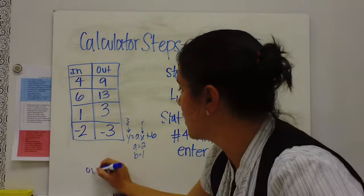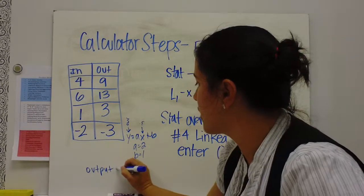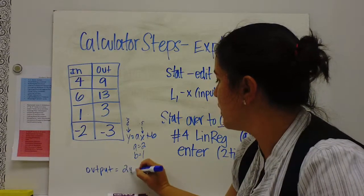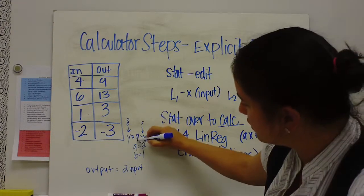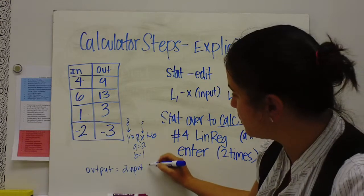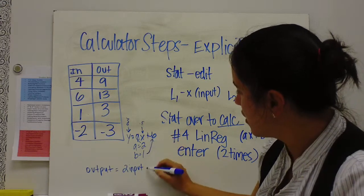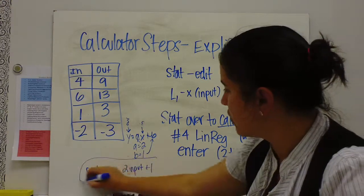So it would look like output equals 2 input, and remember the 2 comes from the a, so 2 times input plus 1 would be your b.